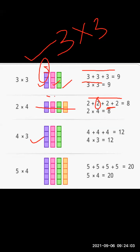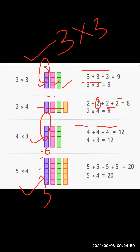In the third one, there are 4 boxes in each group, and we add 4 three times. Instead of addition, we write directly 4 into 3, which equals 12. In the last one, there are 4 blocks with 5 in each. 5 plus 5 plus 5 plus 5 — four times — gives 20. We can multiply 5 into 4, which equals 20.